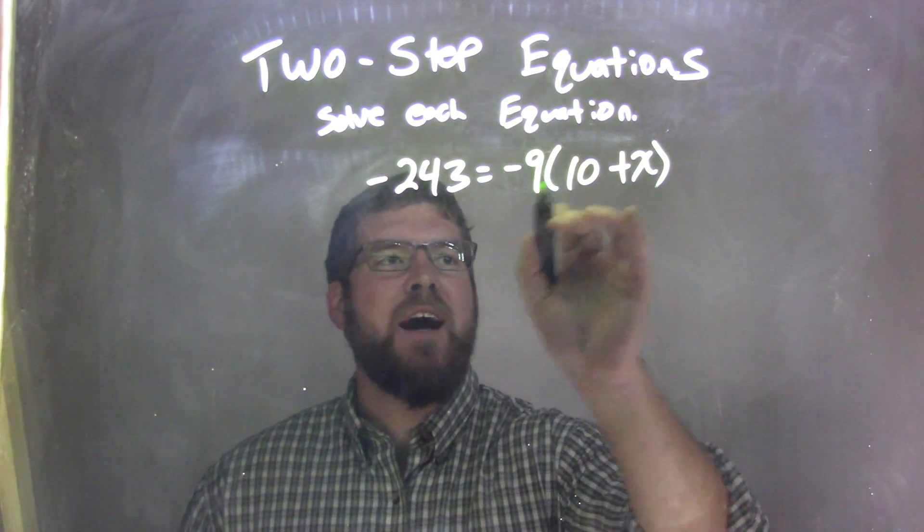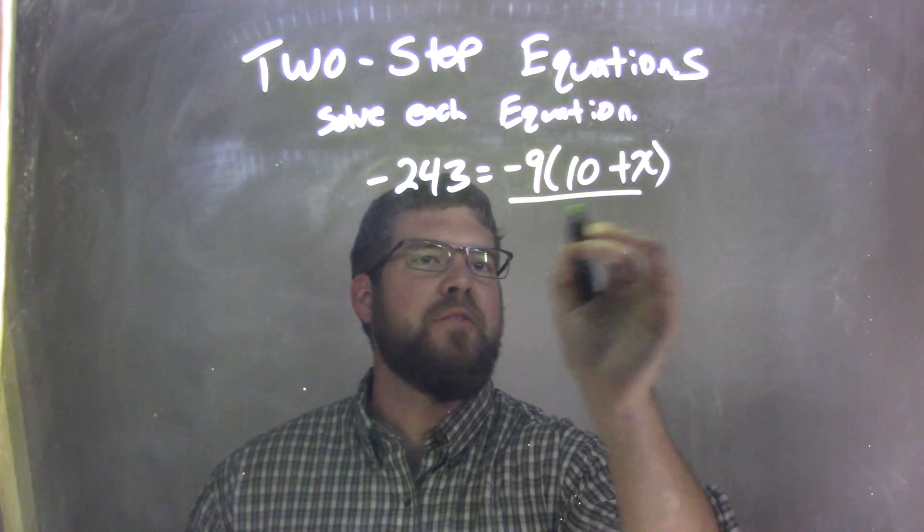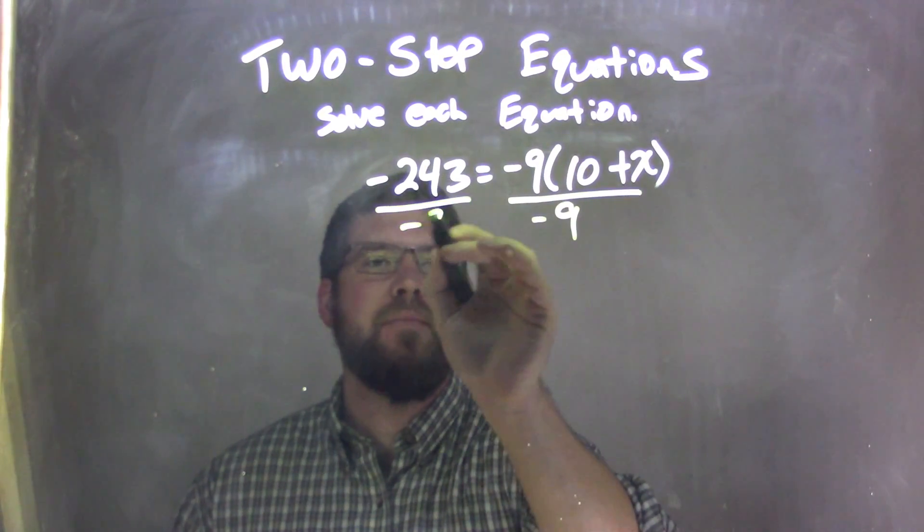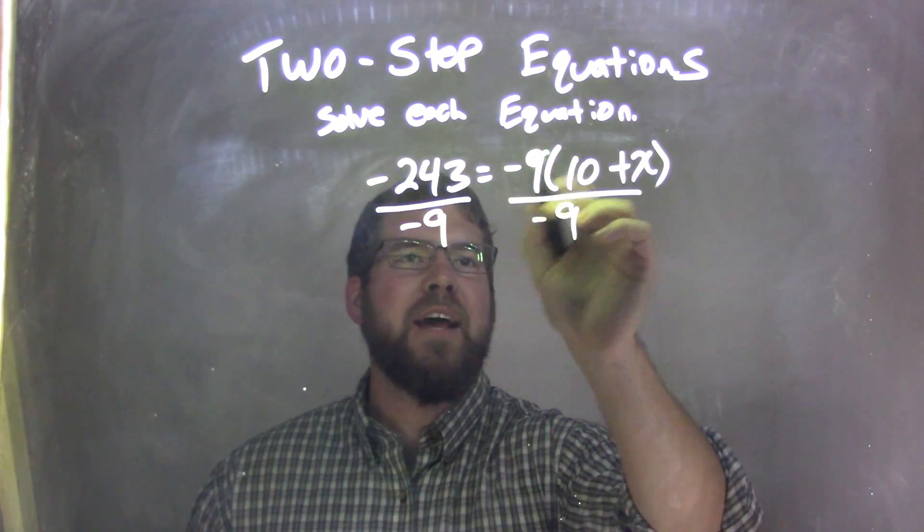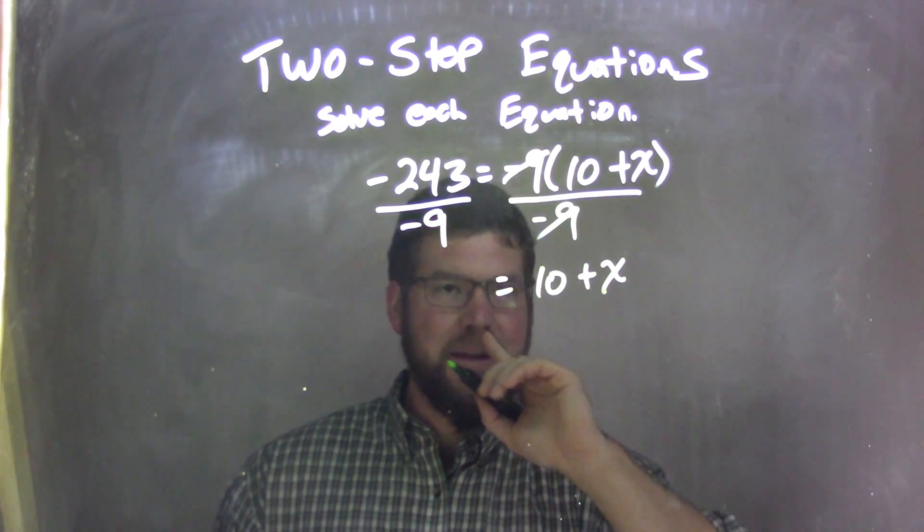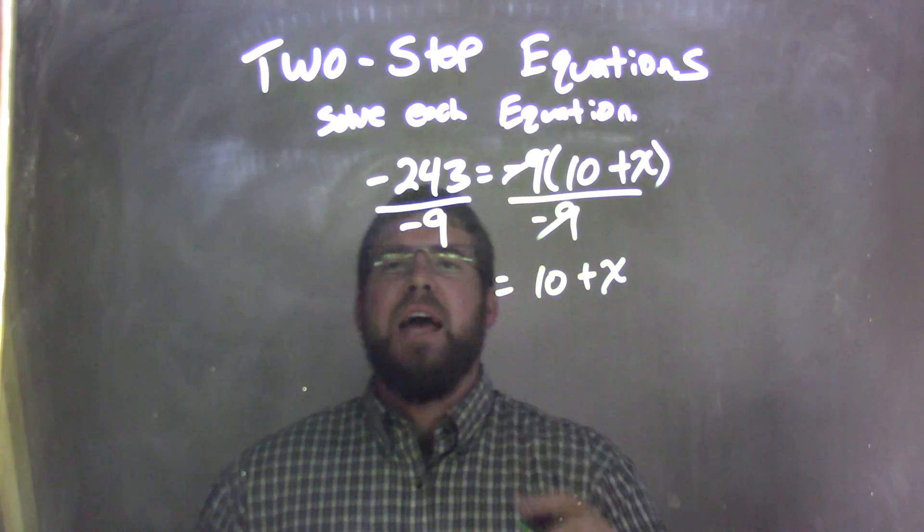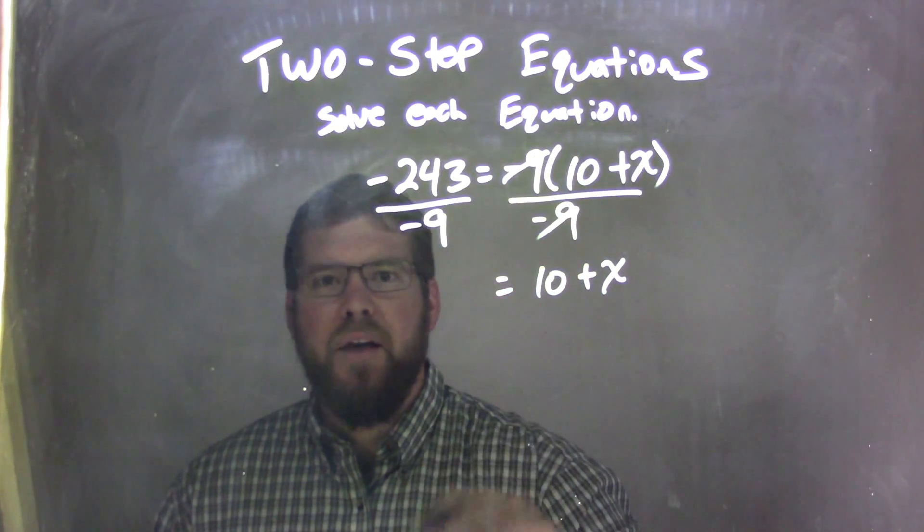Well, that negative 9 times what's in the parentheses, I want to get rid of that first. There's multiplication there, so I'm actually going to divide by negative 9 first. Well, the negative 9 will cancel here, leaving me just the 10 plus x left on the right, and I don't need the parentheses anymore. I can take those off. And I know that a negative divided by negative is a positive. Fantastic.